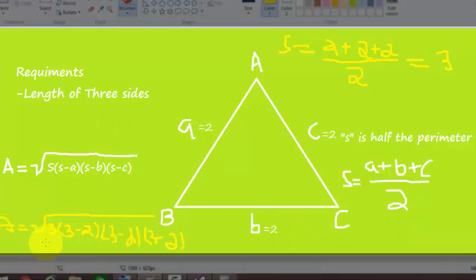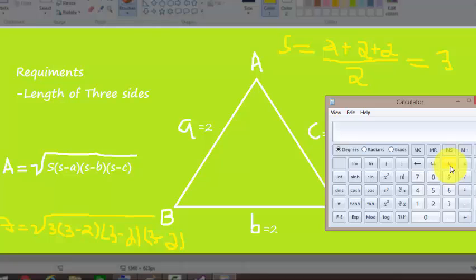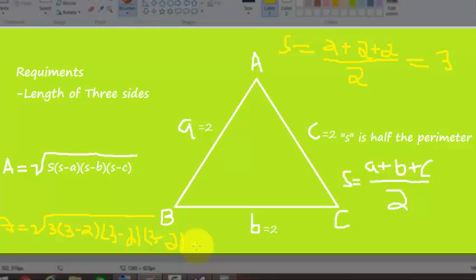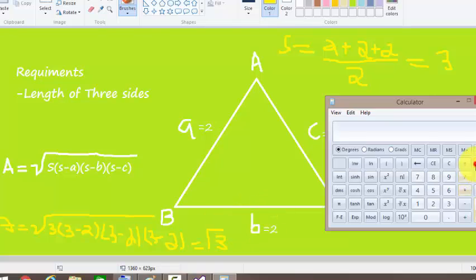3 minus 2, 3 minus 2, 3 minus 2 because all lengths are the same, so let's calculate it. 3 minus 2 equals 1, so we have all these equal to 1. The area comes to 1.73.